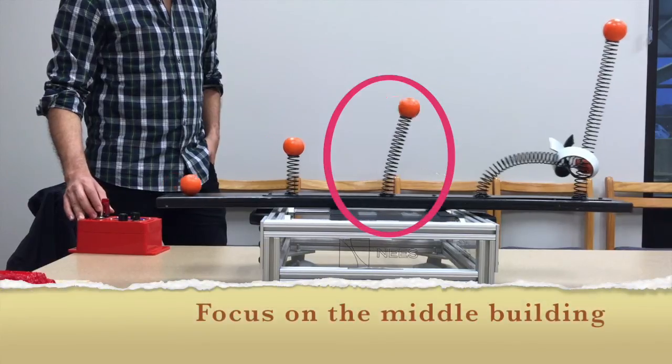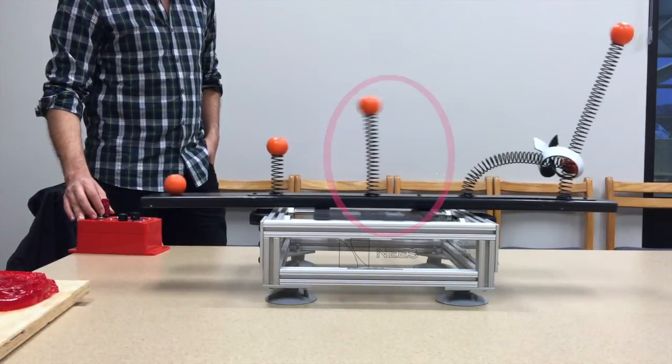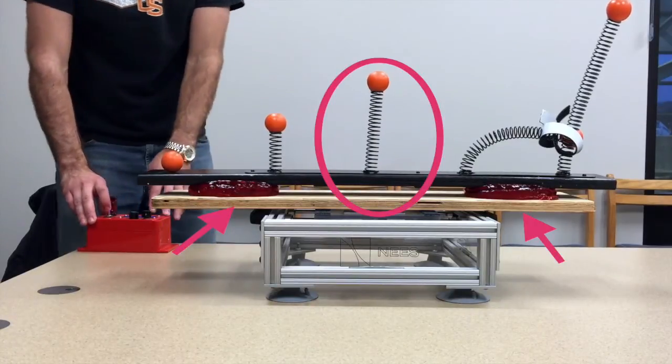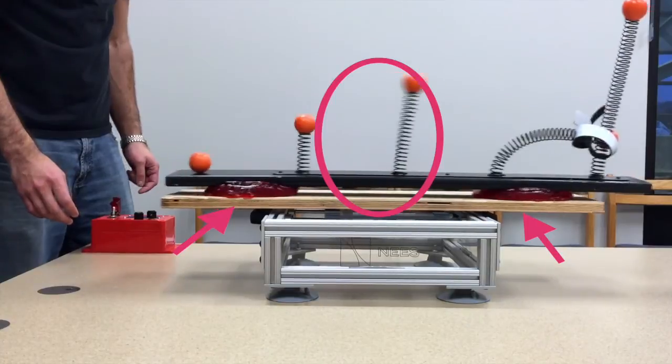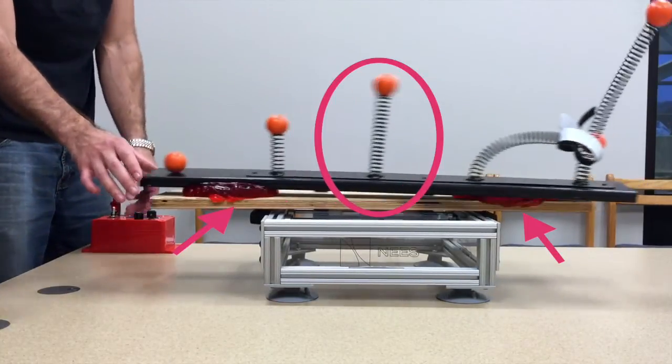With the stiff foundation, the building is showing relatively small movements. Once the jello is placed under the building, it is clear that the displacement is larger. Also, the building loses stability and potentially would have collapsed.